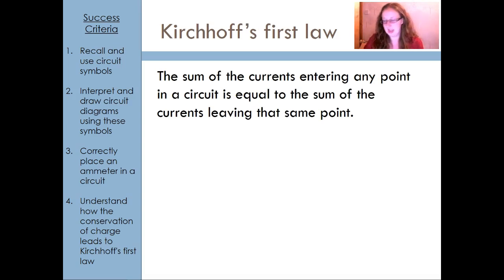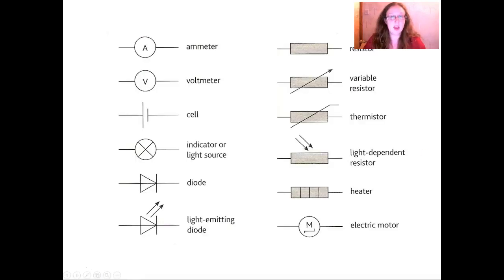Okay, one last thing that you will need to learn is some circuit symbols. There we go. So these are all of the circuit symbols that you will need to learn. So there are 12 here. These are the ones the exam board expect you to know. Ammeter, voltmeter, cell, an indicator, a light source. That could be a bulb, but it could just be anything that indicates the circuit is on. A diode, a light emitting diode, resistor, variable resistor, thermistor, light-dependent resistor or LDR if you're lazy, heater and electric motor. So you do need to know all of these. We will talk about more of these later.